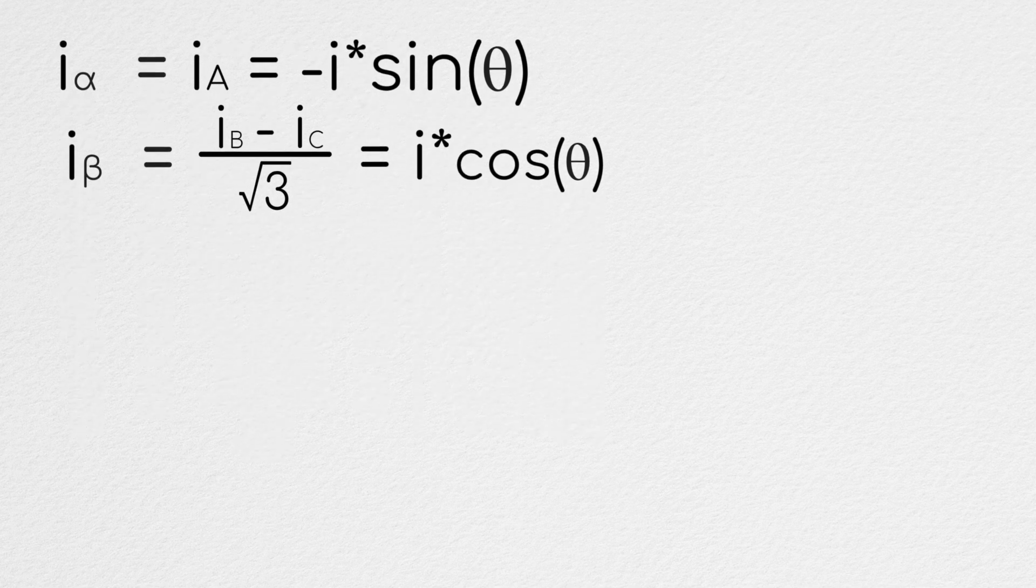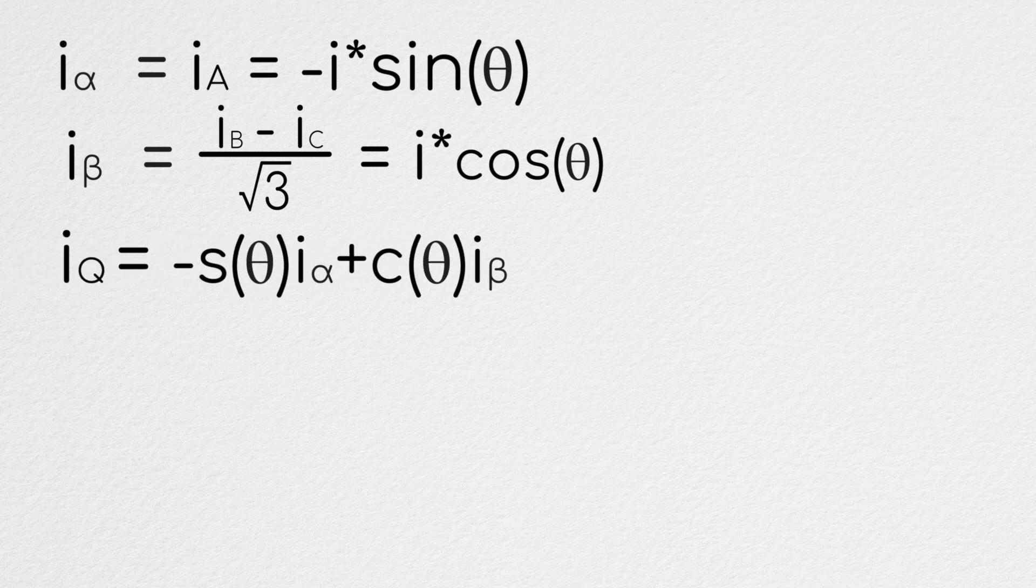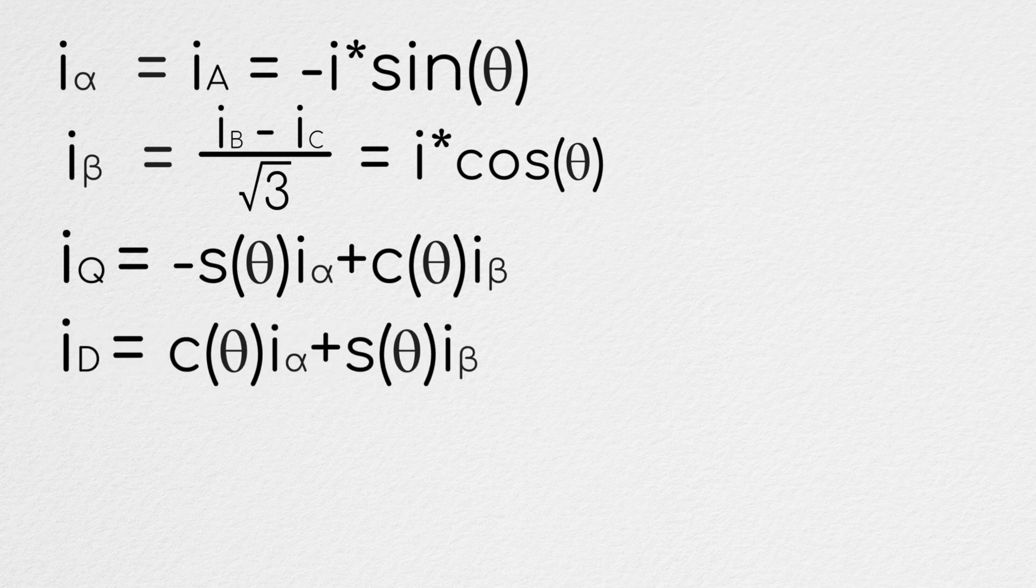We know our current in the q direction is equal to the current in the alpha direction times the negative sine of theta plus the current in the beta direction times the cosine of theta. Meanwhile, our current in the d direction is equal to the current in the alpha direction times cosine of theta plus the current in the beta direction times sine of theta.